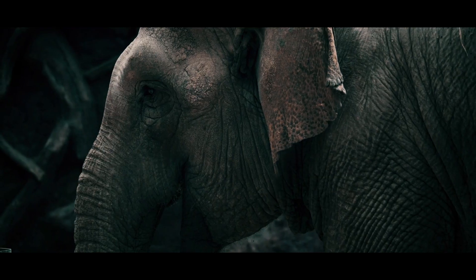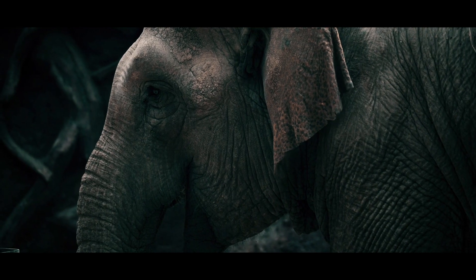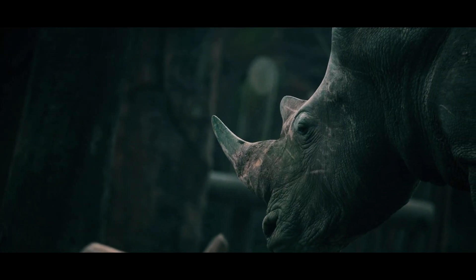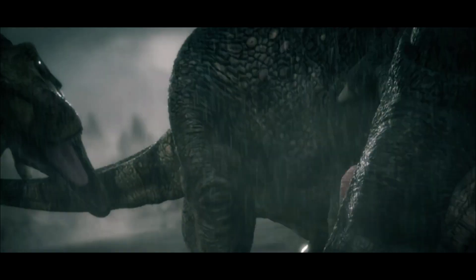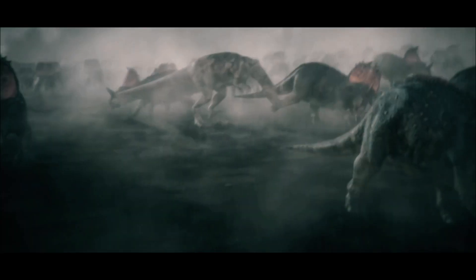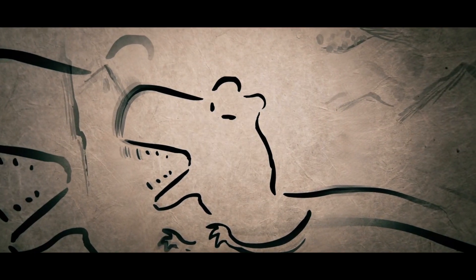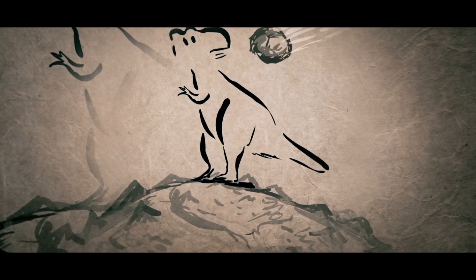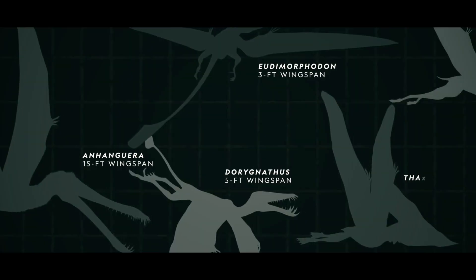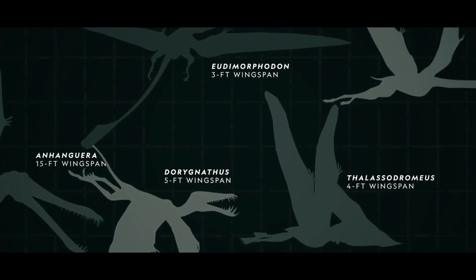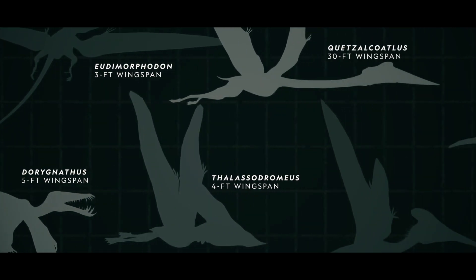Mammals began to evolve very quickly after the dinosaurs went extinct, because that pressure against large size was no longer there. Previously, if mammals grew too large, they could be easily hunted and eaten by dinosaurs. But now, with that ecological niche opened up, they were free to evolve in order to reach the top of the food chain.